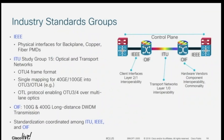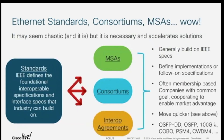We've talked about a lot of these different standards groups — they're all trying to define different parts of the network. IEEE is kind of the foundation for Ethernet. We have ITU, which does largely the long haul. There's a group called the Optical Internetworking Forum, which does some of these interoperability agreements for the missing pieces. And then we have all these MSAs — multisource agreements — on top of that.